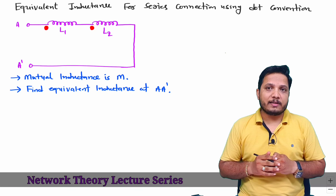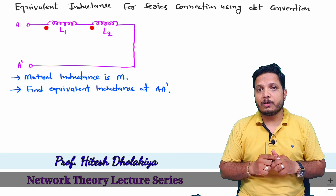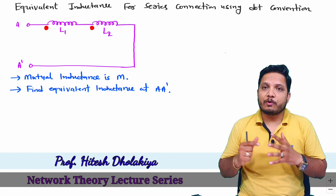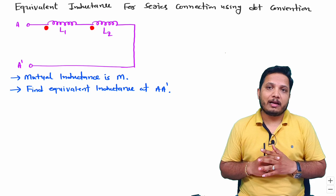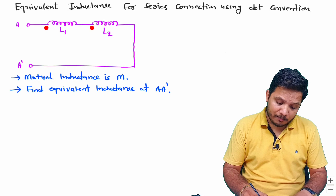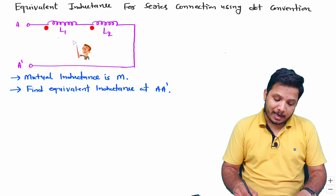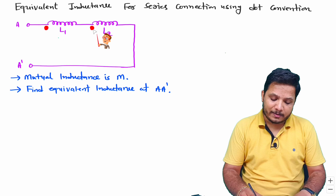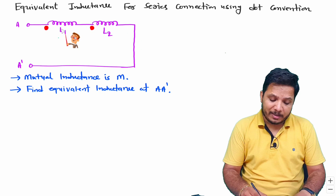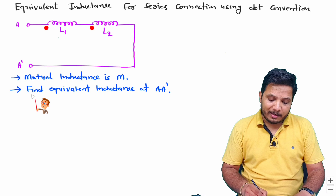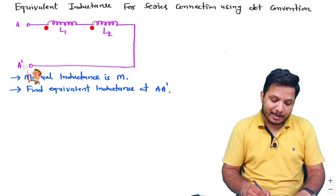Welcome to network theory lecture series. I, Professor Ritesh Dolakya, am going to explain equivalent inductance calculation for series connection of inductors using dot convention. Here we have L1 and L2 connected in series, with dot convention indicated by the red dots, and mutual inductance M between L1 and L2. We are required to find the equivalent inductance at terminal AA'.